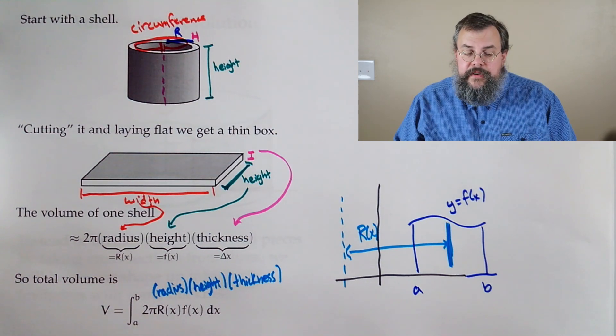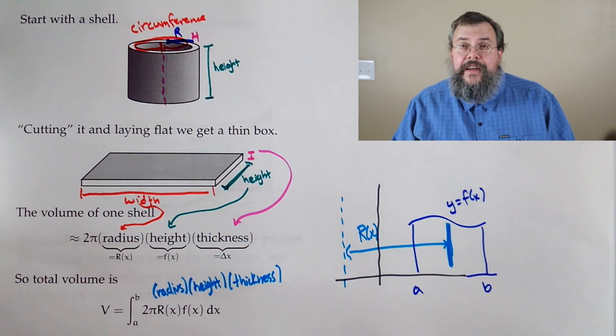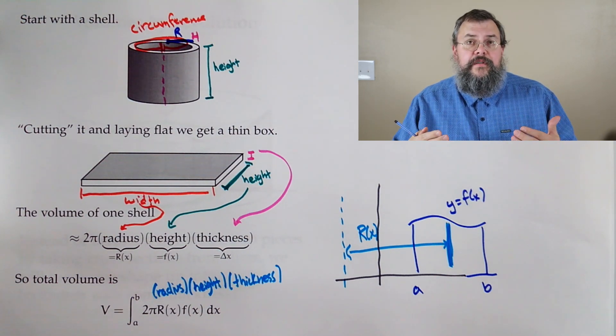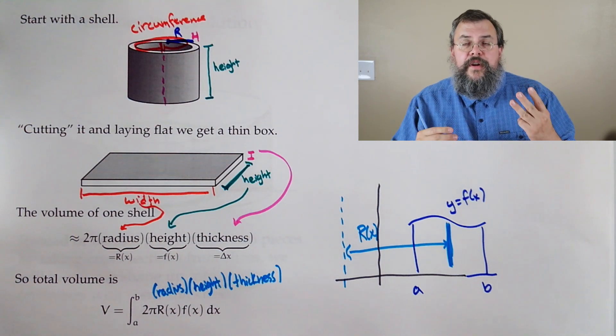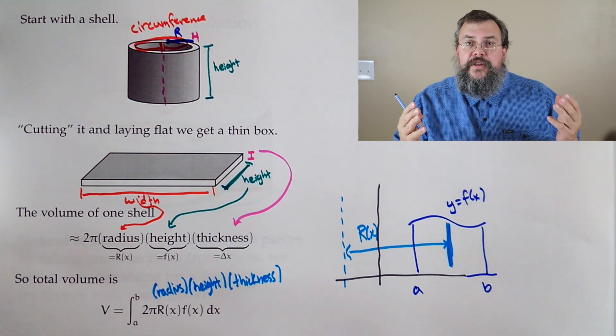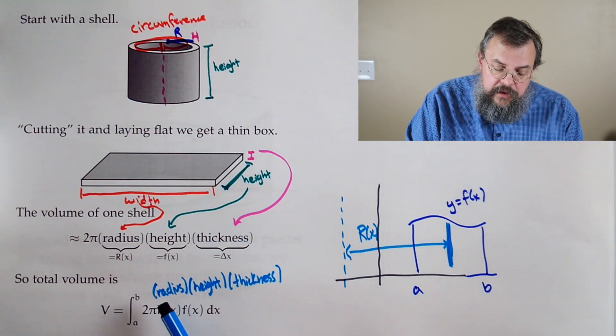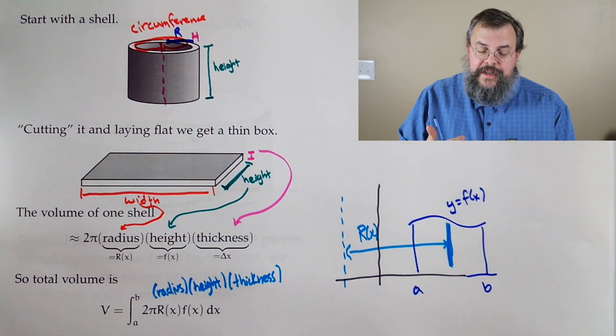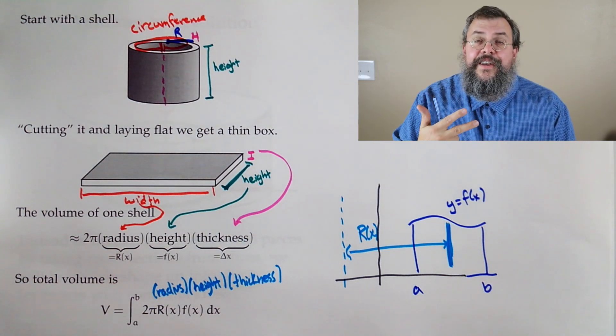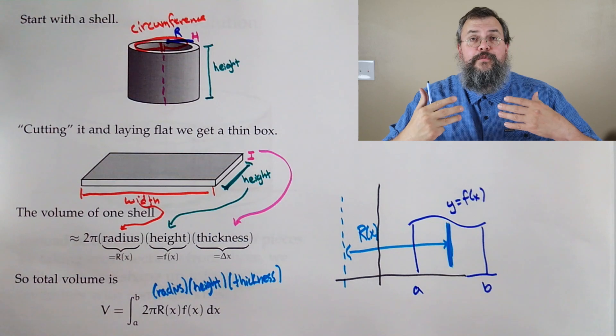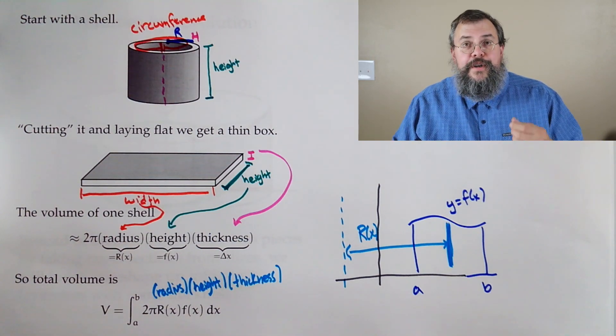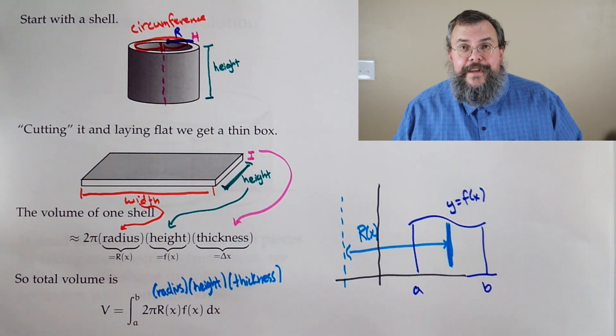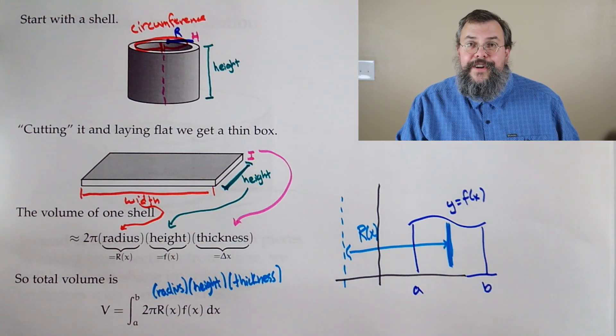Now, one nice thing to help convince ourselves that we're kind of on the right track is to think about, what should a volume consist of? A volume should really have three measurements involved, because it's three-dimensional. So if we think about it, we say, a radius, that's one measurement. A height, there's number two. And a thickness is number three. So that says, hey, this is a reasonable way to think about what a volume should be. A sign that we're doing something right.